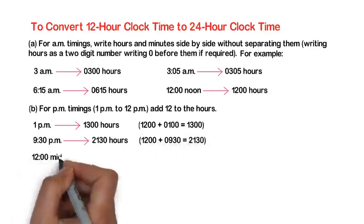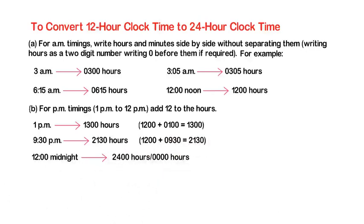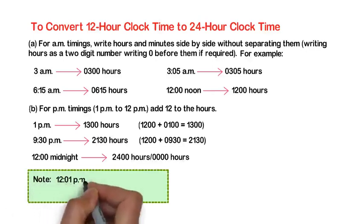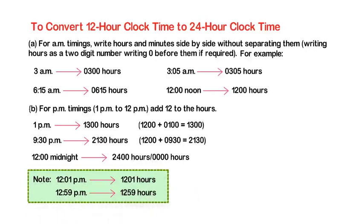12 midnight, 2400 hours, 0000 hours. Note, 12:01 p.m. 1201 hours, 12:59 p.m. 1259 hours.